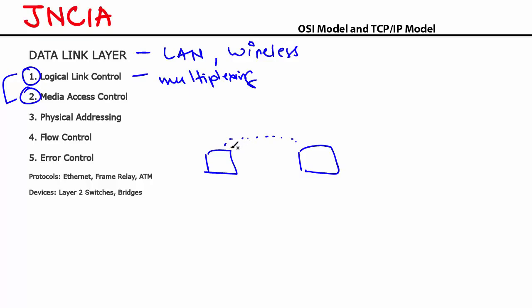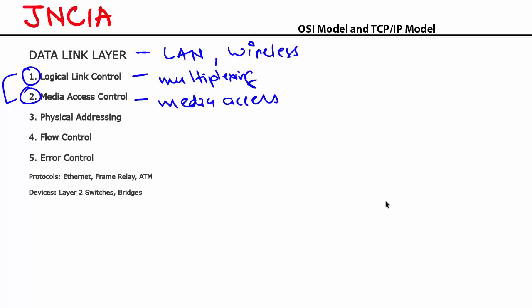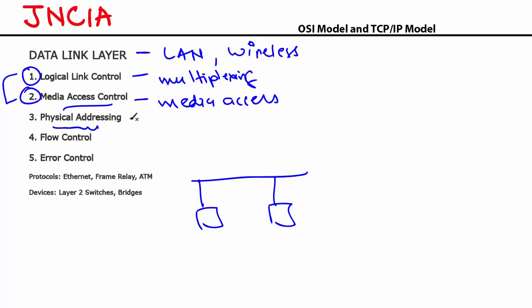The second sub-layer is the MAC layer, which is responsible for media access. When multiple devices are trying to talk over the same shared medium, they need to access that medium, and that access is controlled by the MAC sub-layer. The other important function of your data link layer is physical addressing — this is what you call the MAC address, the address that is actually burnt into your device's chip. That's your real address.